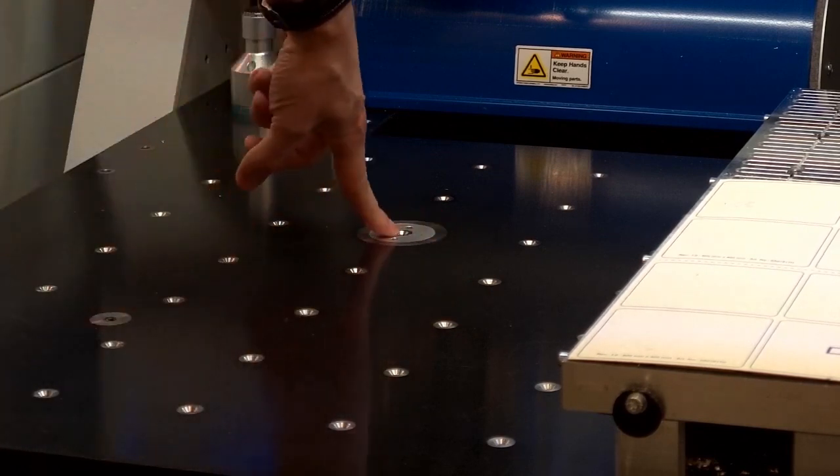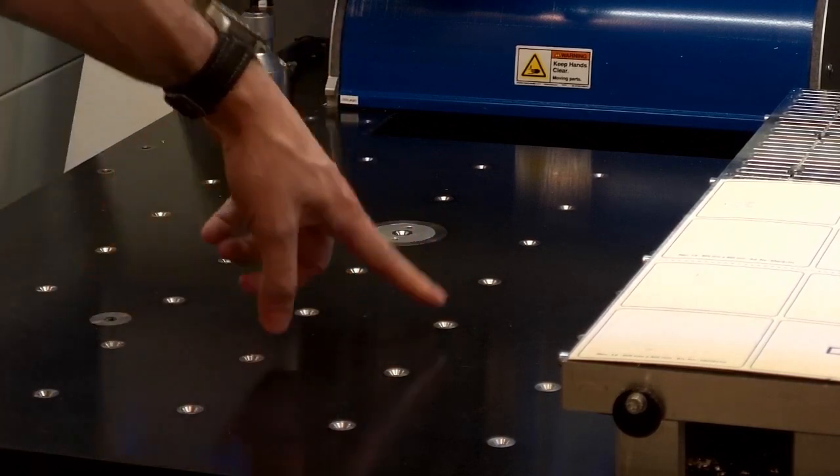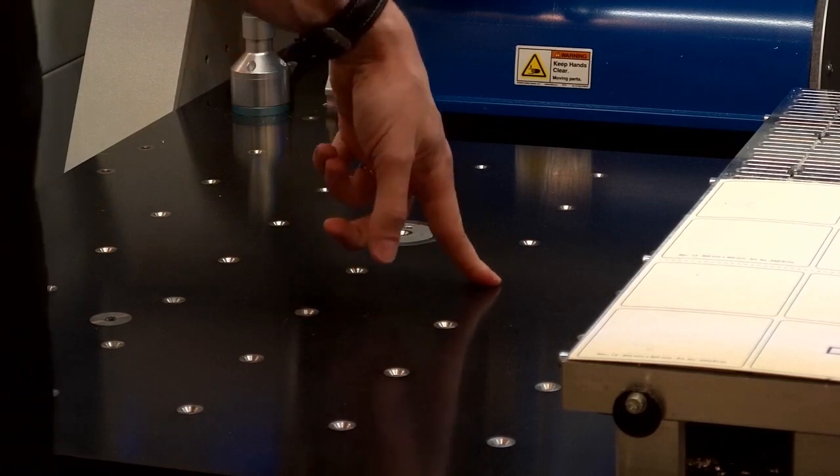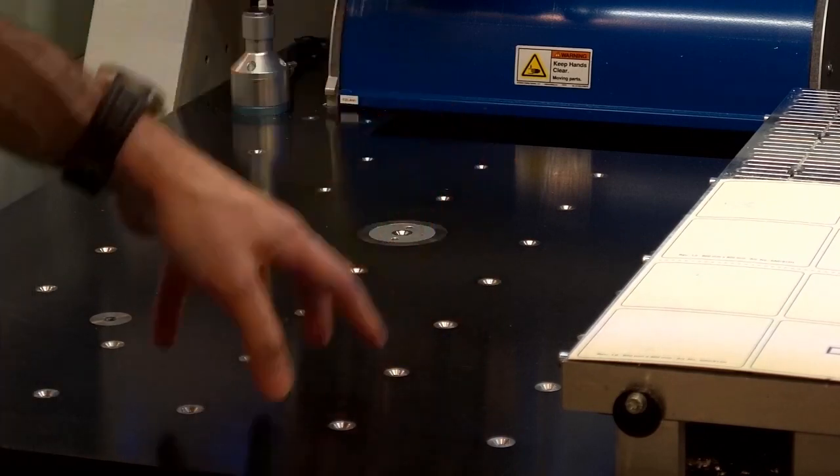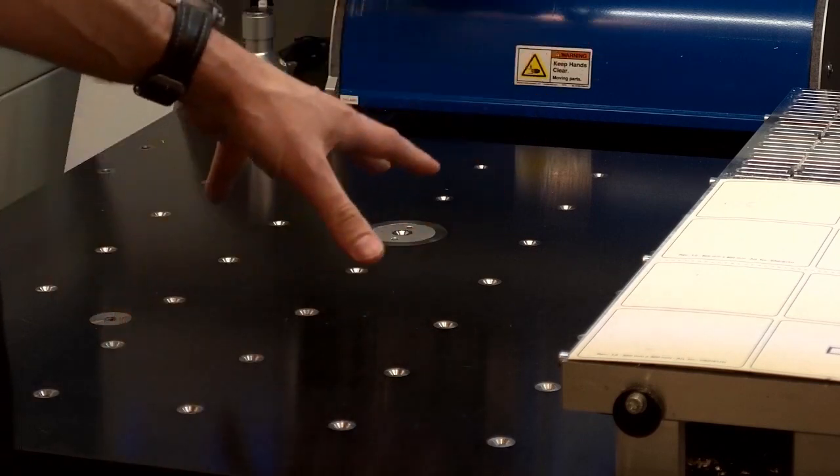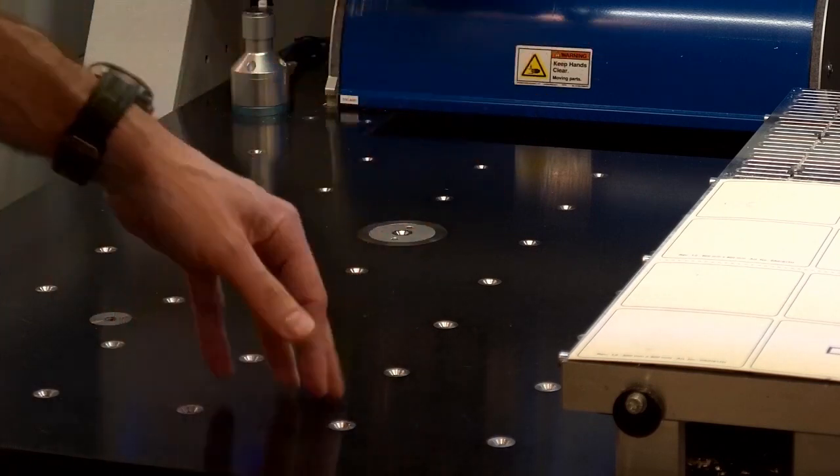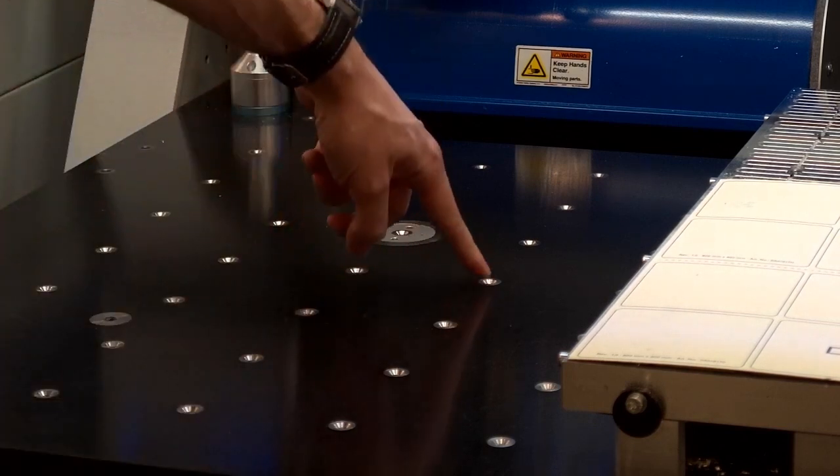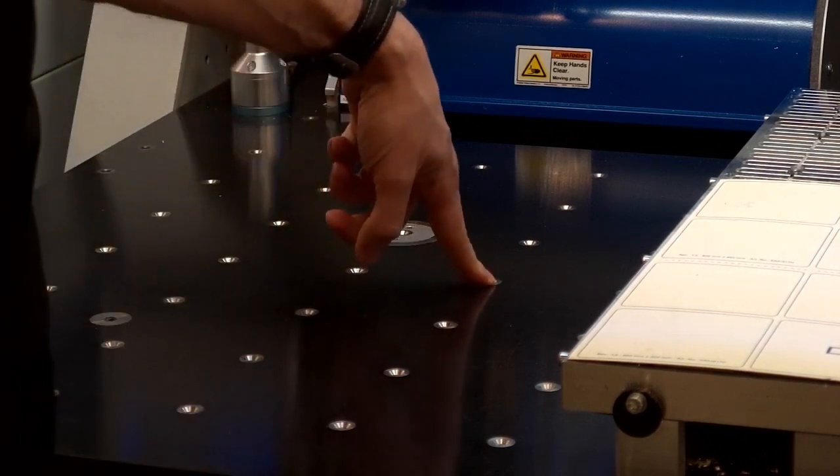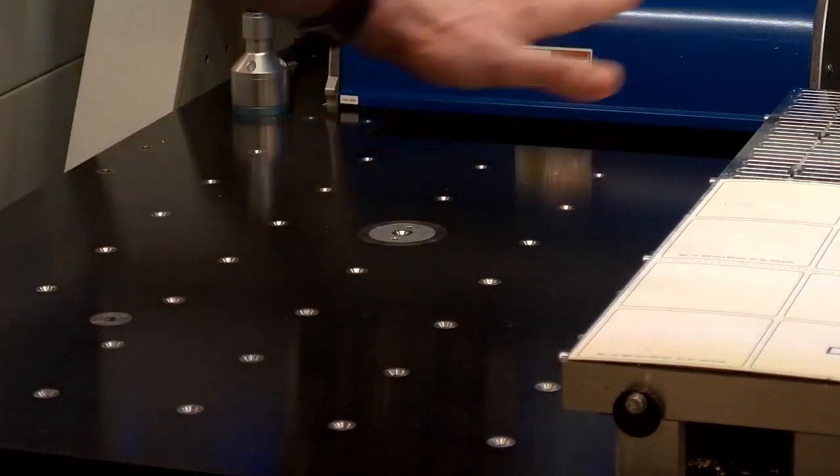You can see there that actually centers up with one of our mating conicals. This is how we mount our fixturing to our table. Instead of having a traditional T-slot table where you need to use T-slot nuts and tram your fixtures in, we actually use mating conicals. We have a female conical in the table that is milled by the machine after it's been calibrated, so you know these are true to the axes of the machine.